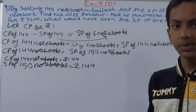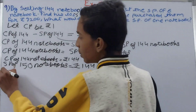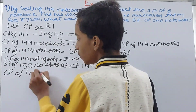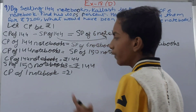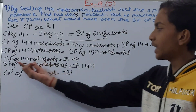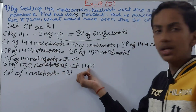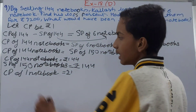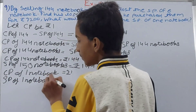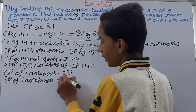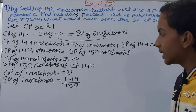Now we find the SP and CP of one notebook separately. The CP of one notebook is Rs. 1 as assumed. The SP of one notebook is 144 divided by 150. So SP of one notebook = 144/150.